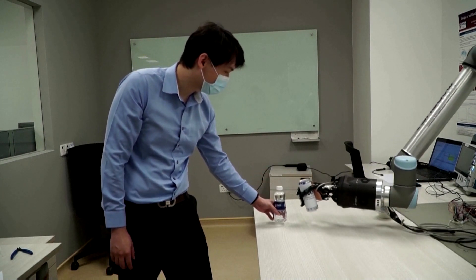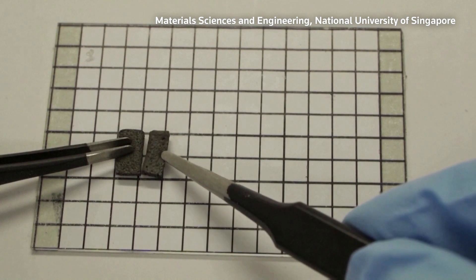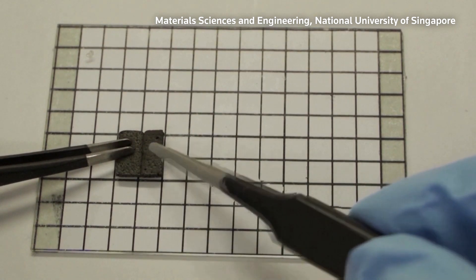The smart foam can also repair itself when damaged. Check out this piece for instance. When cut in half, it can fuse back into one piece.